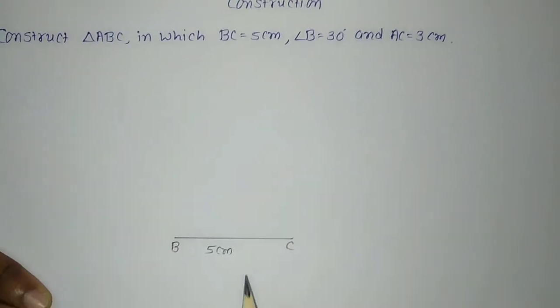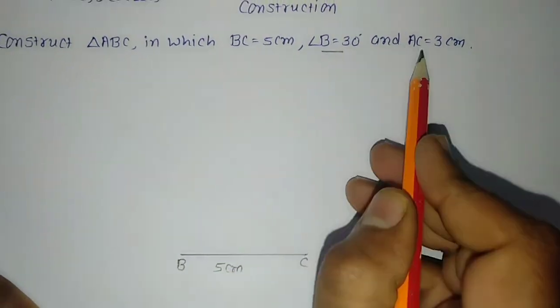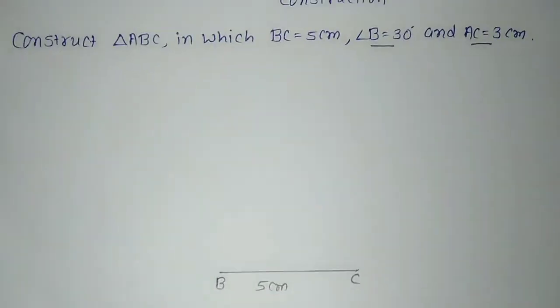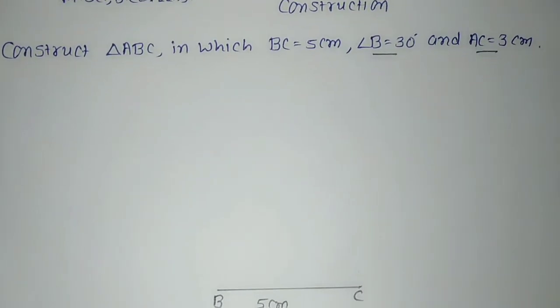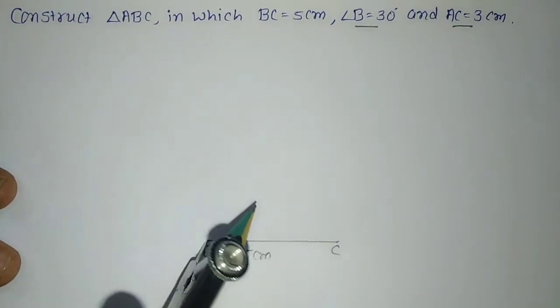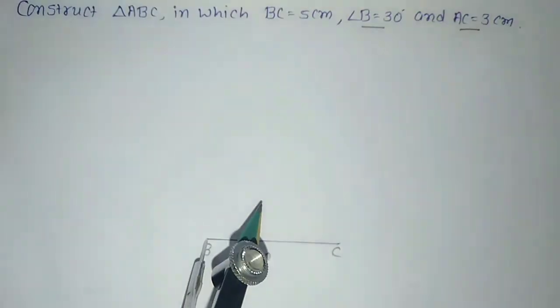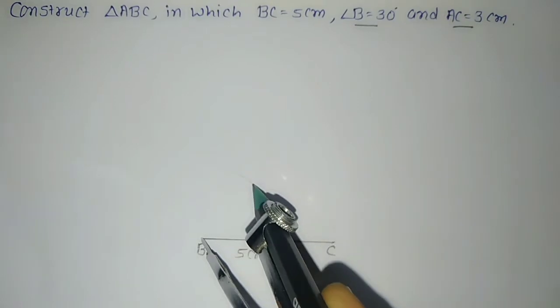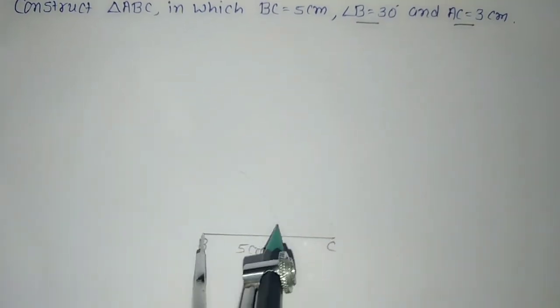Now we want angle B equal to 30° and AC equal to 3cm. For that, by keeping point on B we'll take arbitrary radius and make angle 60°. You know how to make 60°? In construction we are never using protractor.